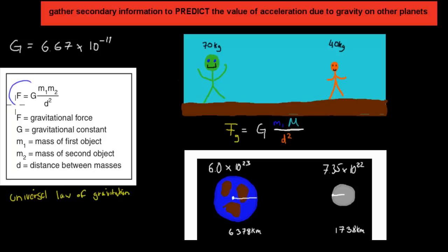This is the formula: F, the gravitational force between those two objects, is going to be G, the gravitational constant — and constant means it's always going to be the same, it's always going to be 6.67 times 10 to the power of minus 11. Don't remember that number because it's going to be in your worksheets. Then we have two different types of masses — the mass of the first object and the mass of the second object. So this just means that as long as you have two objects that have a mass, there's going to be some kind of force being applied.